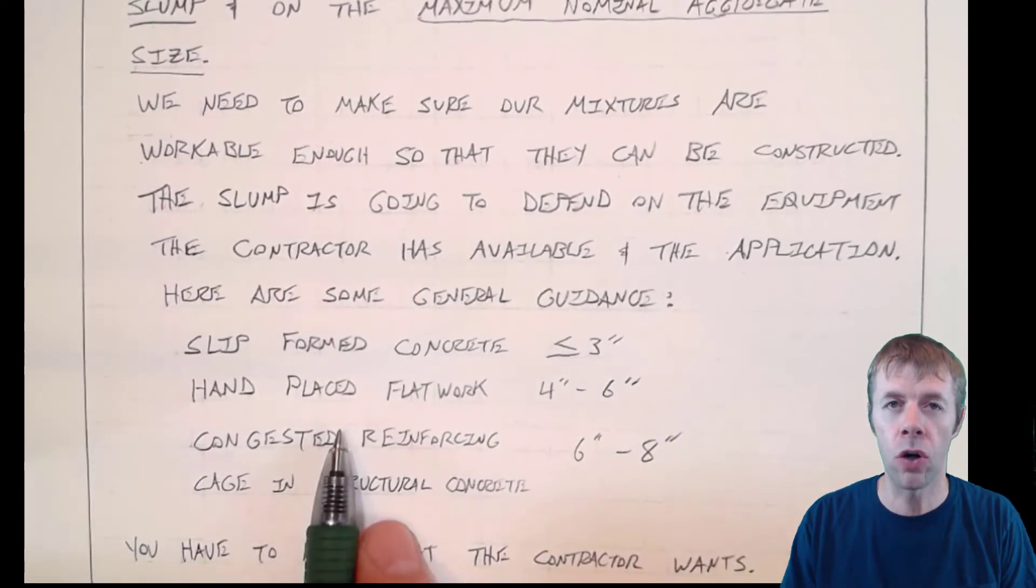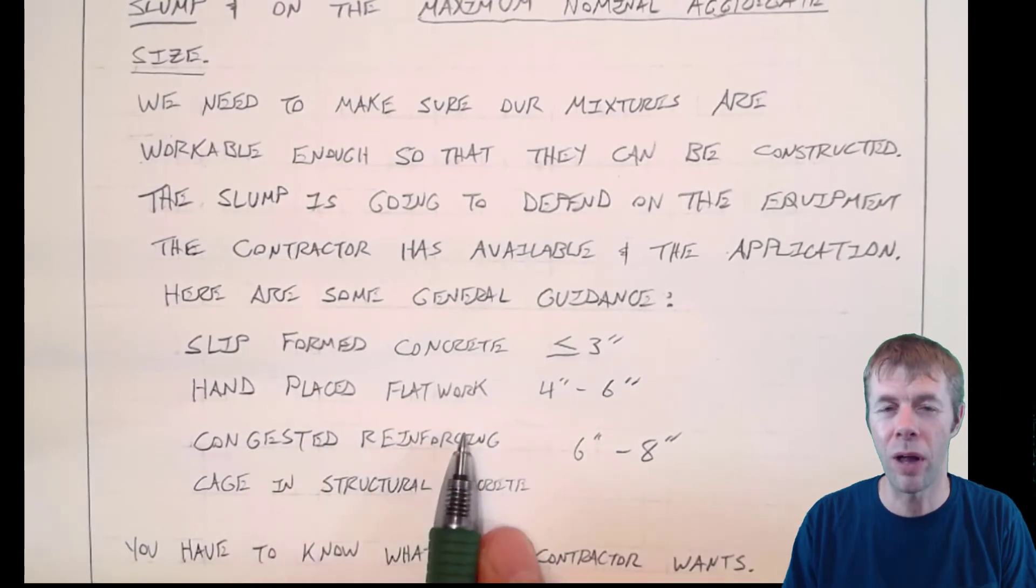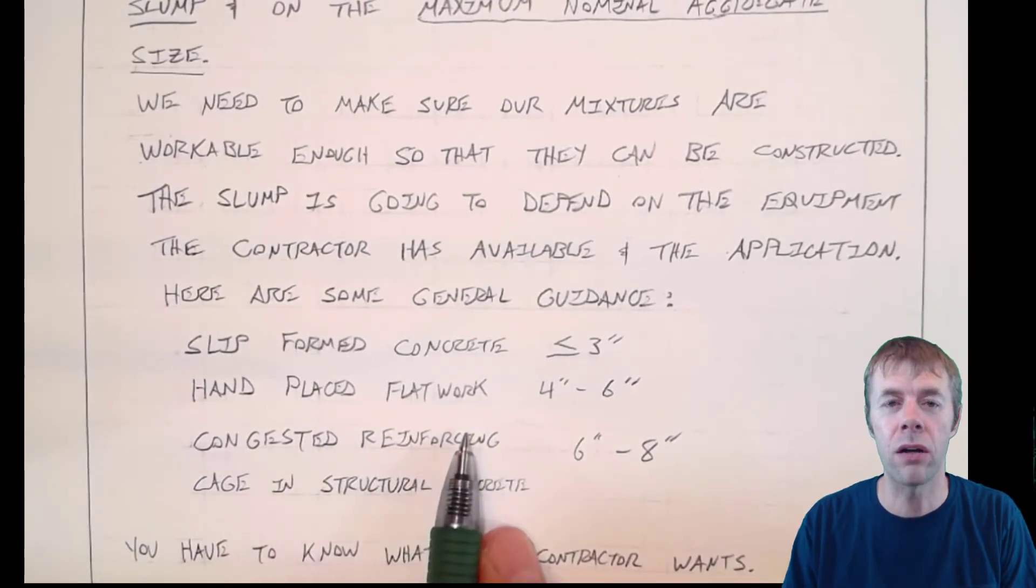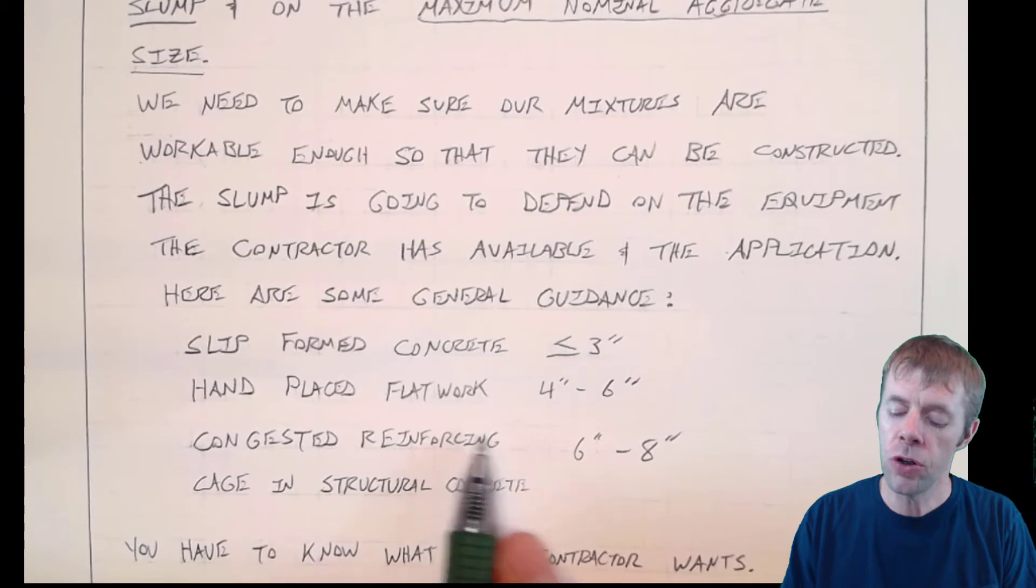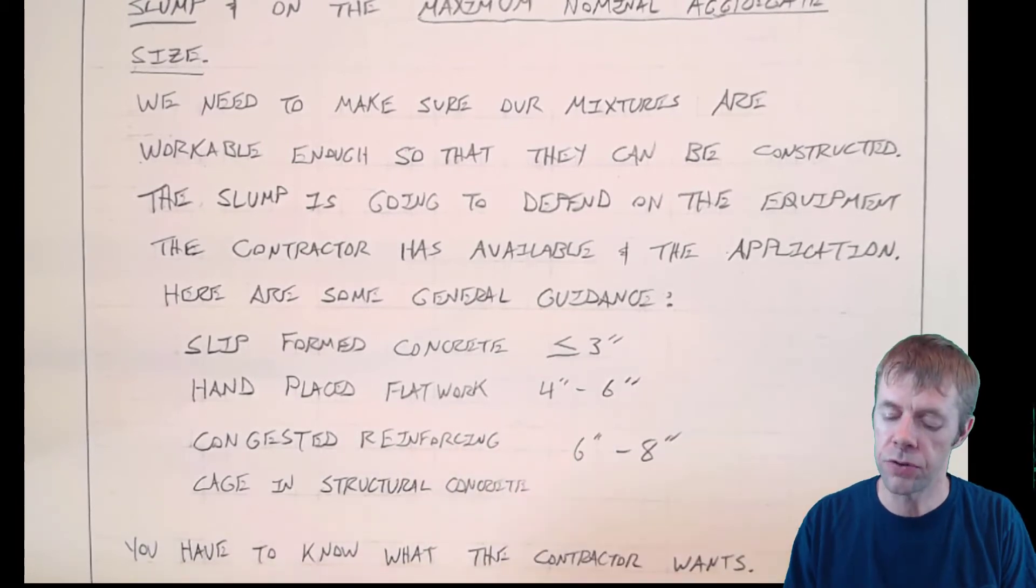If you're going to hand place the concrete but you're doing flat work, like a sidewalk or like a large slab, then you usually want four inches to six inches of slump.